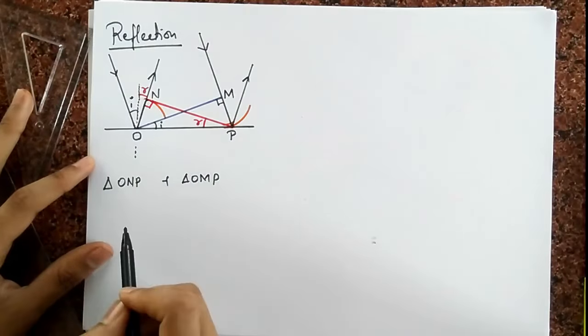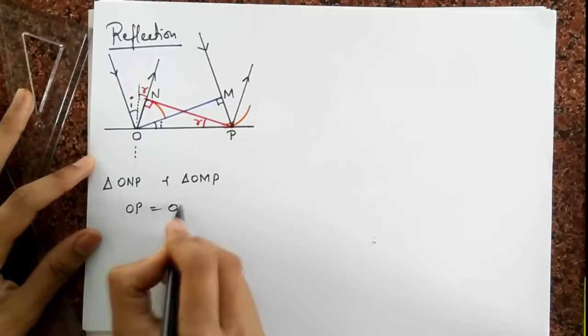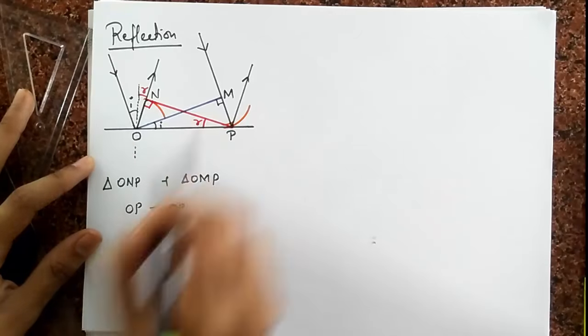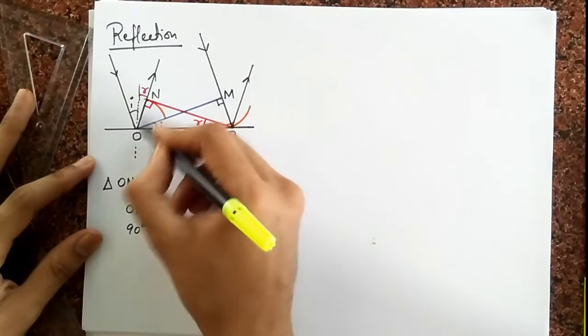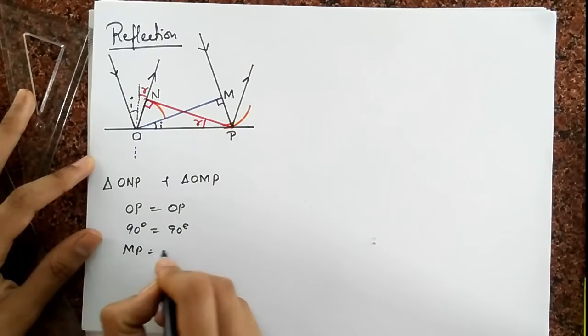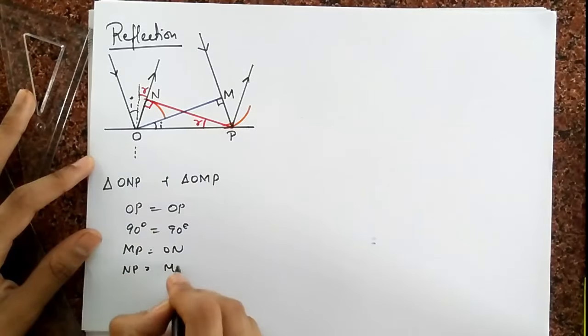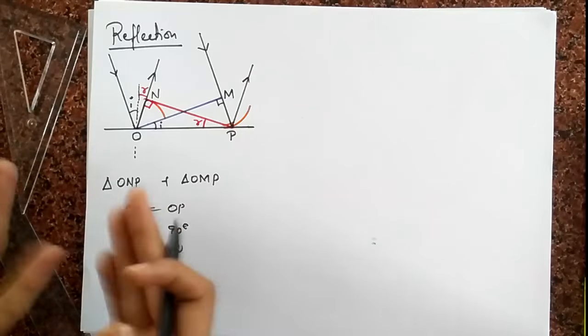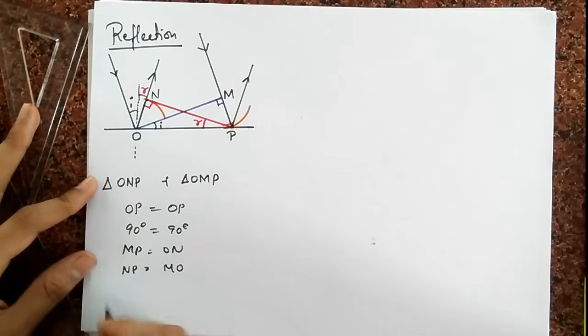So if you now look at these two triangles, I can say well they have the same side OP, they have two angles to be 90 degrees, and also MP must be equal to ON because I took the same radius. So MP and ON are equal, and these are congruent triangles. And if the triangles are congruent, then all the angles must be equal, and this immediately proves that I should be equal to R.